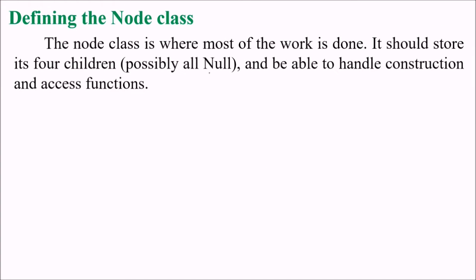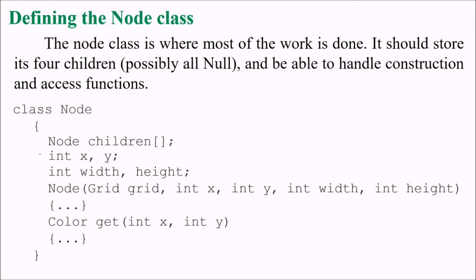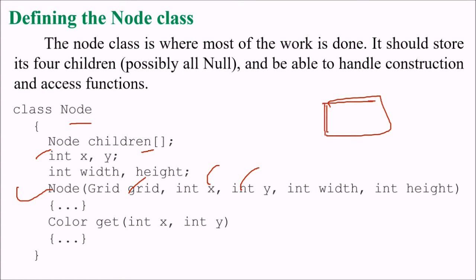The node class is where most of the work is done. It should store the four children, possibly all null, and handle construction and access functions. The class Node has four children, and fields: int x, y, width, height, and a grid value. The node constructor takes all these values including color, since we are dealing with a color image, plus a color get function.